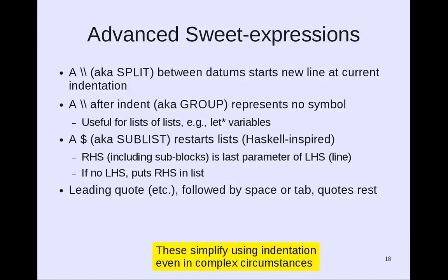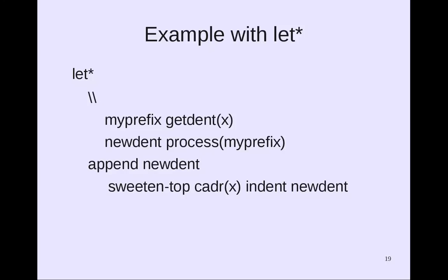Here are the advanced Sweet Expression capabilities. A backslash-backslash, also called a "split between datums," starts a new line at the current indentation level — particularly useful for keywords. A backslash-backslash after the indent, called the "group symbol," represents no symbol at all, and is useful for lists of lists such as let* variables. A dollar sign, the "sublist," restarts lists — inspired by Haskell. The right-hand side, including any subblocks, becomes the last parameter of the left-hand side on that line. If there is no left-hand side, it puts the entire right-hand side into a list. A leading quote followed by a space or tab quotes the rest. These advanced capabilities simplify using indentation even in complex circumstances, such as with let*.